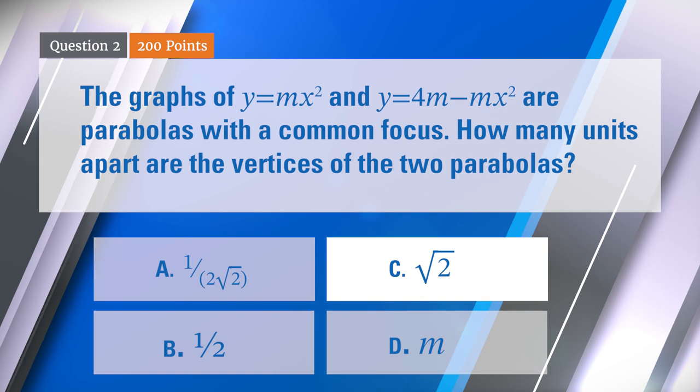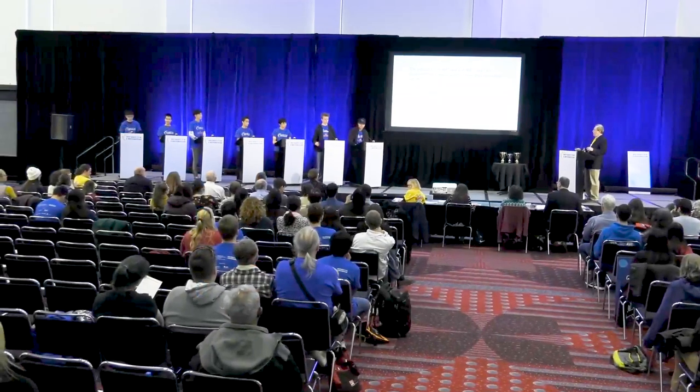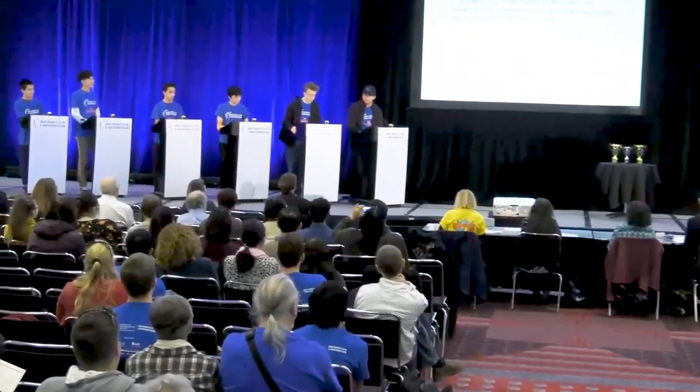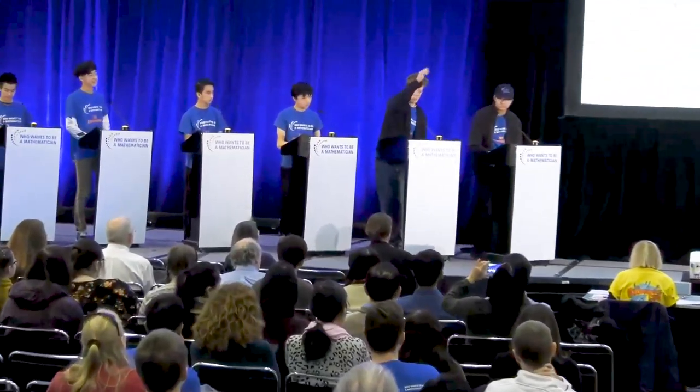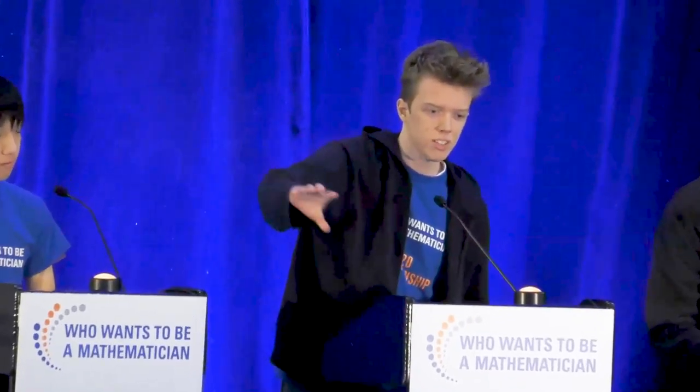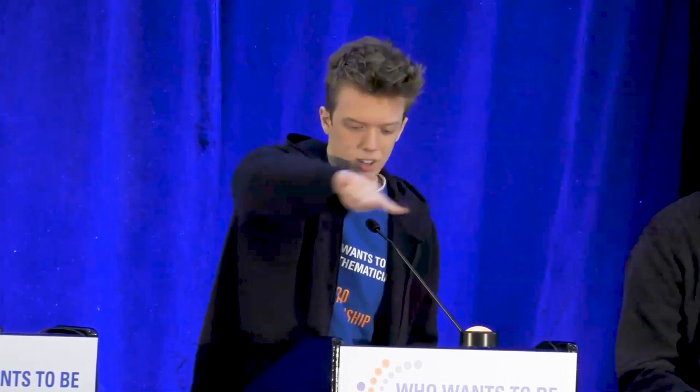Luke exhaled there. Given that you exhaled, does that mean you got it right? That's a happy exhale — how did you get it? Basically, one parabola is sort of up and the other is down. A parabola is the set of points the same distance from the focus and the directrix. Since they share the same focus, by symmetry the focus has to be the point (0, 2m). The directrix of the first parabola is y equals negative 2m, and the point (√2, 2m) is on it, so it's a distance of √2 from the line. The vertices are √2 apart, so the answer is √2.